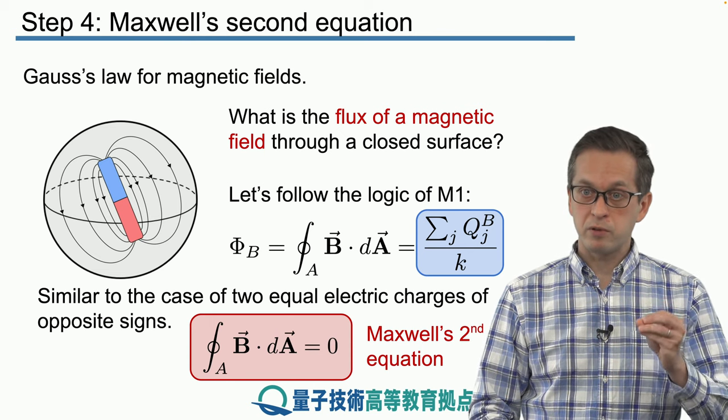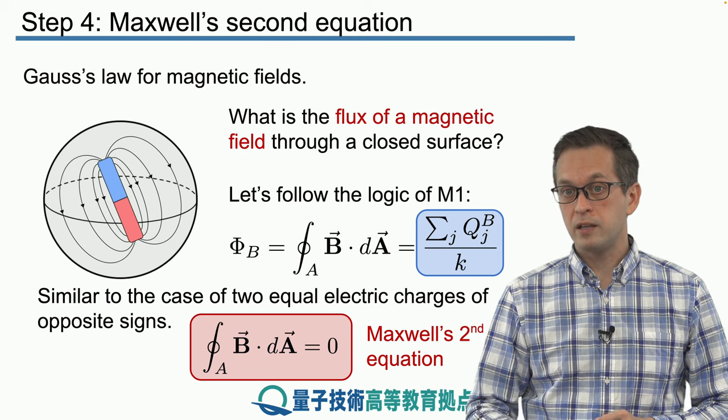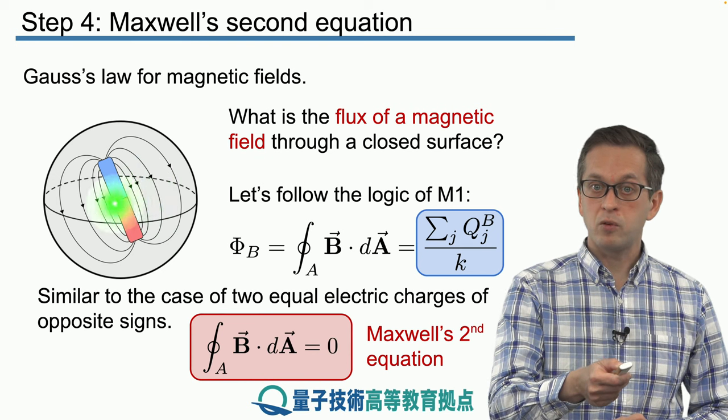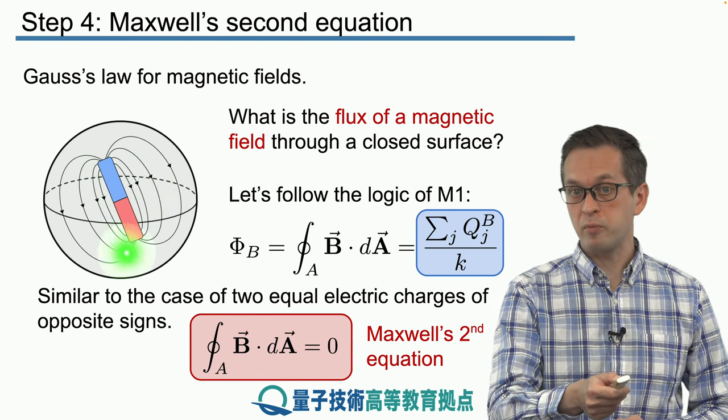Electric fields can be produced by point charges, electric monopoles. In the magnetic field, this is not the case. We always have at least one so-called positively charged, one north pole, and one negatively charged or the south pole.